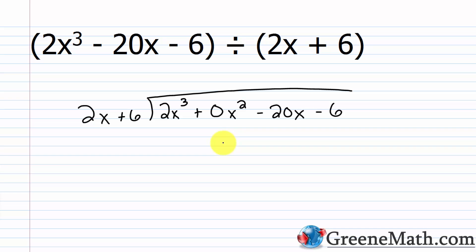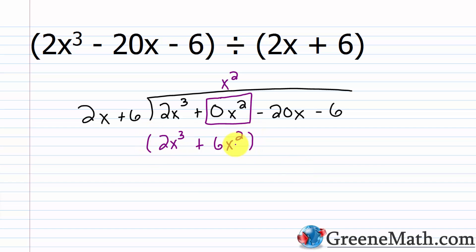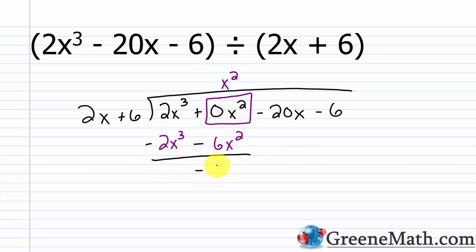Once you've set this up, it's the same thing you've been doing throughout this section — go leading term into leading term. So 2x goes into 2x cubed how many times? 2x cubed over 2x: the twos cancel, and x cubed over x gives x squared. So I put x squared up top. Then I multiply: x squared times 2x is 2x cubed, and x squared times 6 is plus 6x squared. I want to subtract away this polynomial, so I'll change the signs. 2x cubed plus negative 2x cubed is 0.